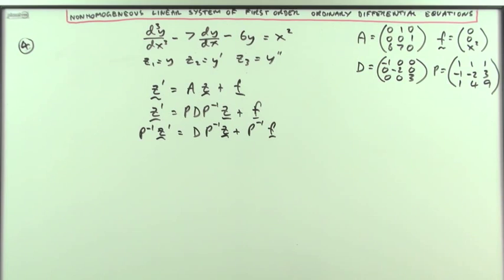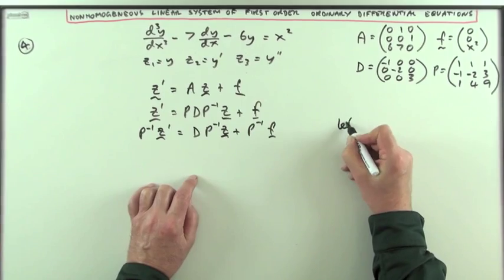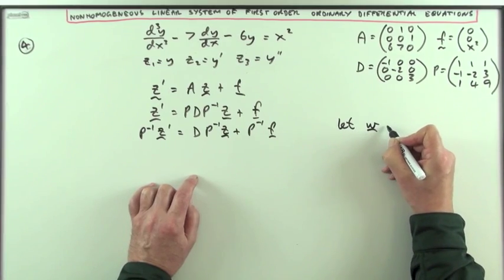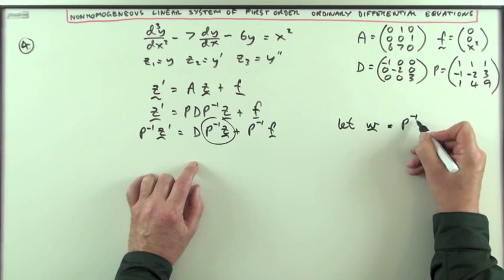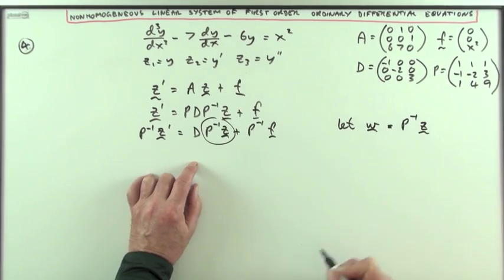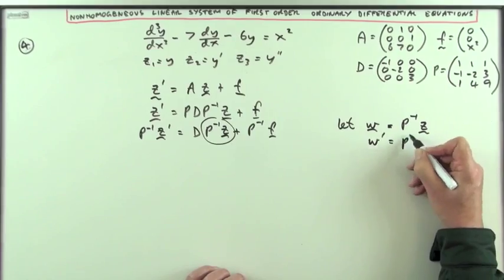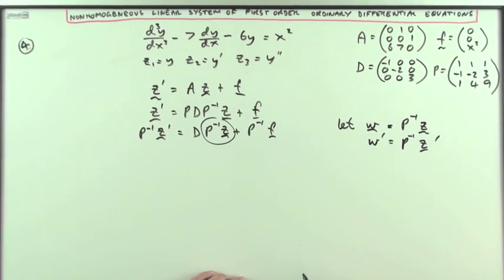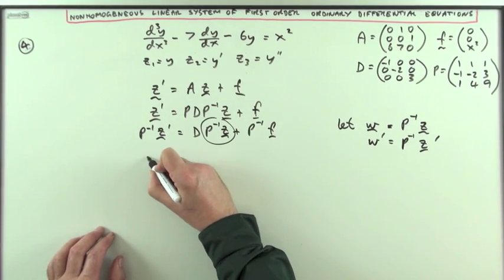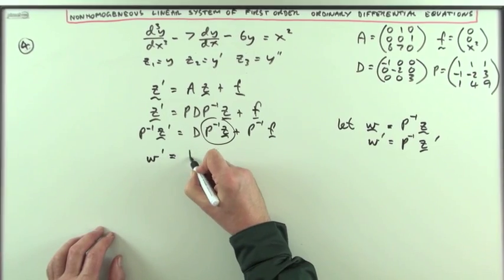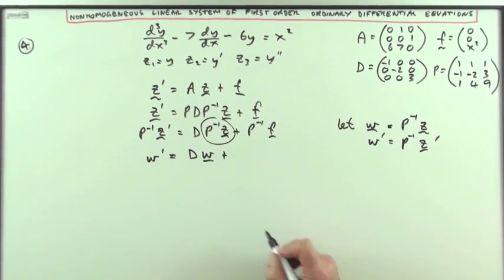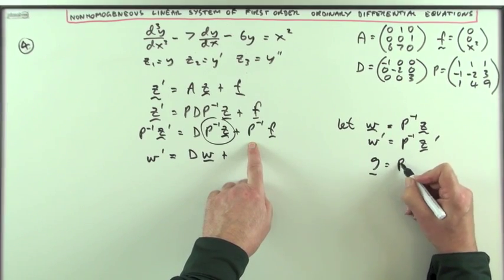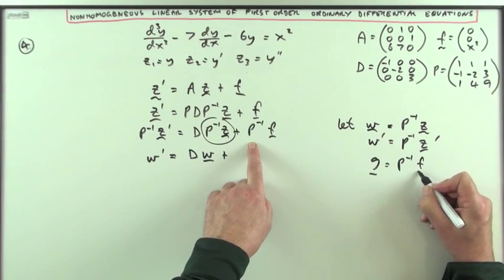And then taking another substitution which will be let w equal this part, equal the inverse of P times z, in which case w dashed will be the inverse of P times z dashed. So so far I've got this. I'll have w dashed equals D times w plus, and I'll have to let g equal whatever this comes to.